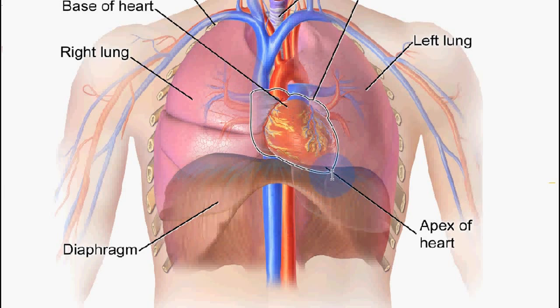Because of this pressure decrease, there is a greater pressure difference between the vena cava and the right atrium. This difference in pressure is what stimulates blood to flow into the right atrium.